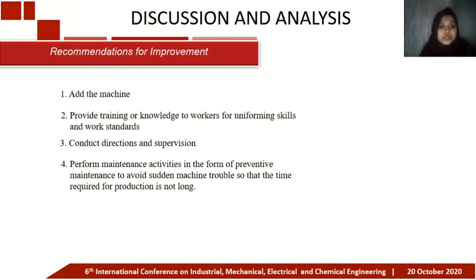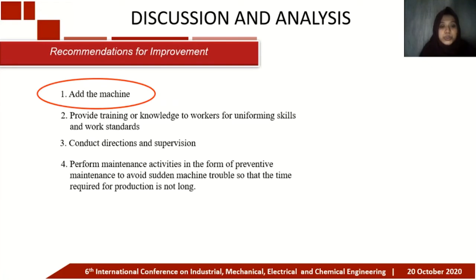Based on the RPN scores, the addition of a machine has the highest dominating score, while other combinations have lower scores that can support overcoming total waste. Therefore, the research recommends prioritizing the addition of a major machine to the production process. This recommendation can also help the company achieve its production targets that were not met due to high waiting times, enabling them to meet product demand.